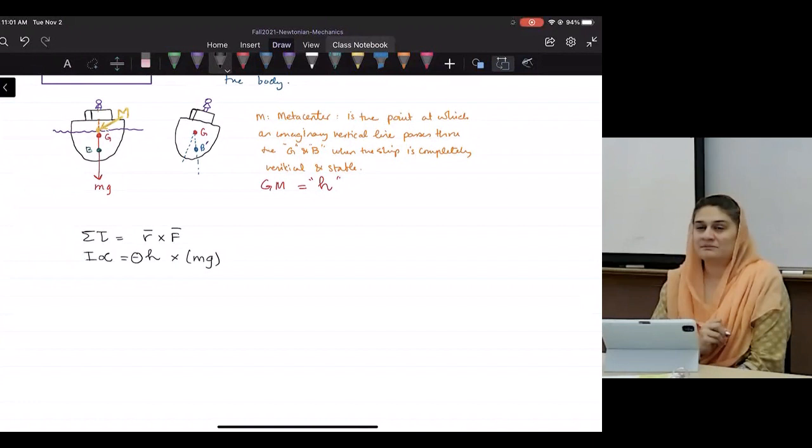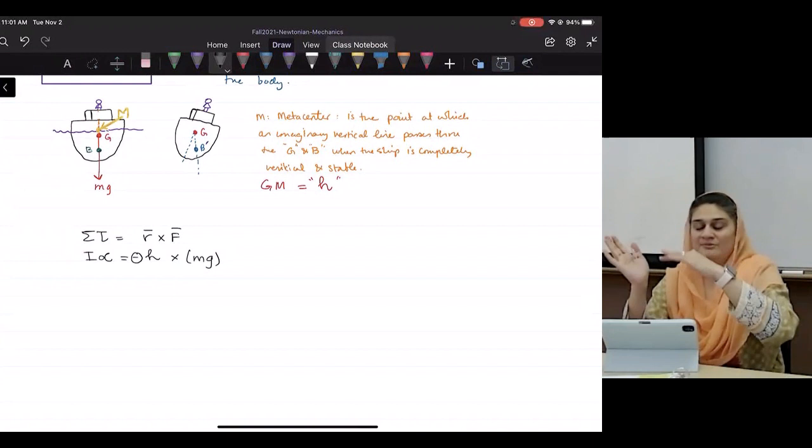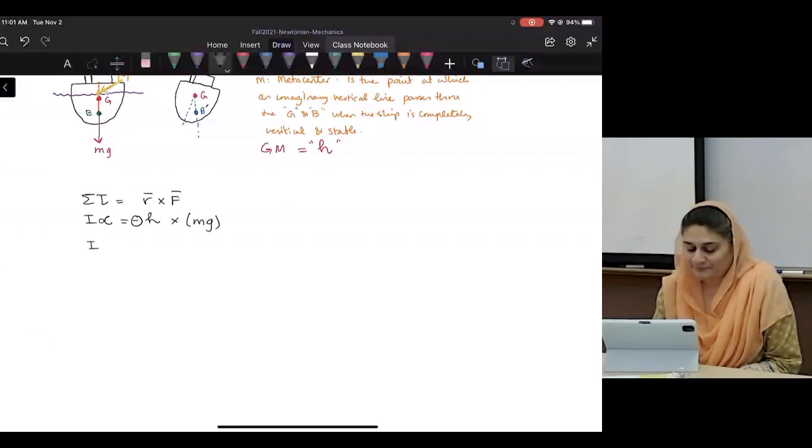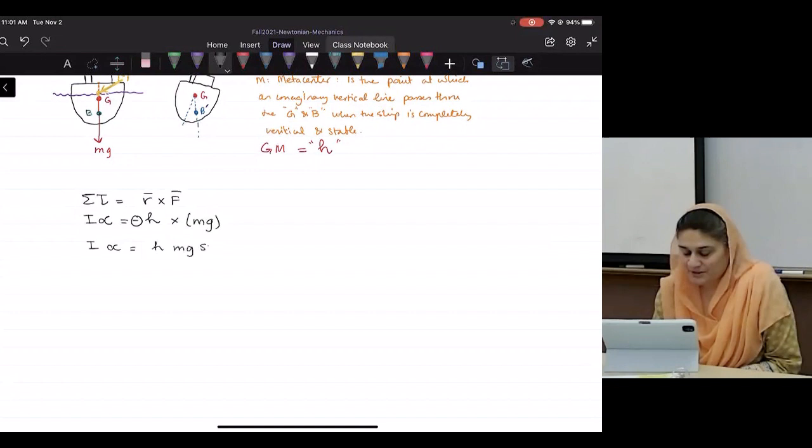And what is sigma torque? I alpha, not zero, because it has an acceleration, right? It's going from one side to another. It obviously has an acceleration. So then may I write this as I alpha equals H M G sine theta.